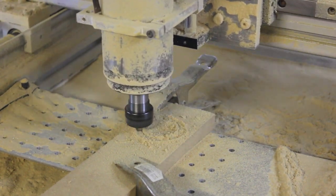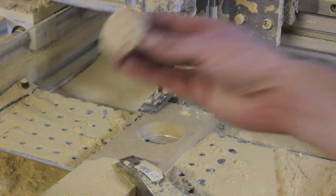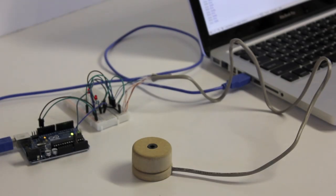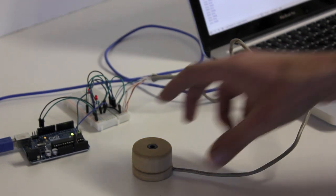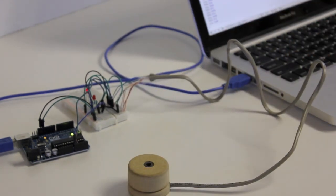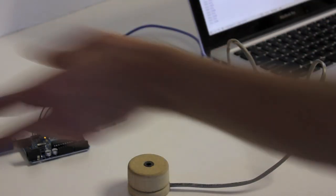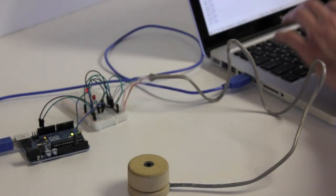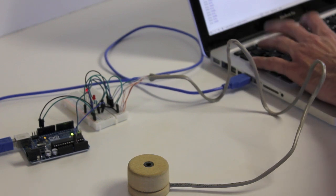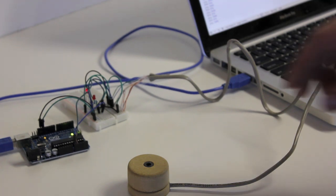So I built this homemade knob that communicates with an Arduino and then goes across the USB cable to Node serial port, and then I pump that over to the browser using BinaryJS.